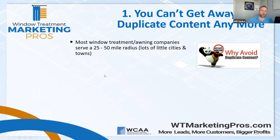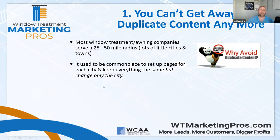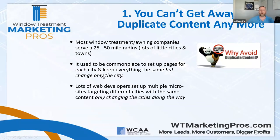When we talk about duplicate content, we're really talking about copying content from other sources or pasting a great article onto your website. Most window treatment and awning companies serve around a 25- to 50-mile radius with a lot of cities in between. What used to happen is web developers would write one page of content, put it up on your site, then copy and paste it while just changing the city name — doing that for 50 different municipalities. That can really hurt you. Google is smart enough to know the content is just changing one word every time.